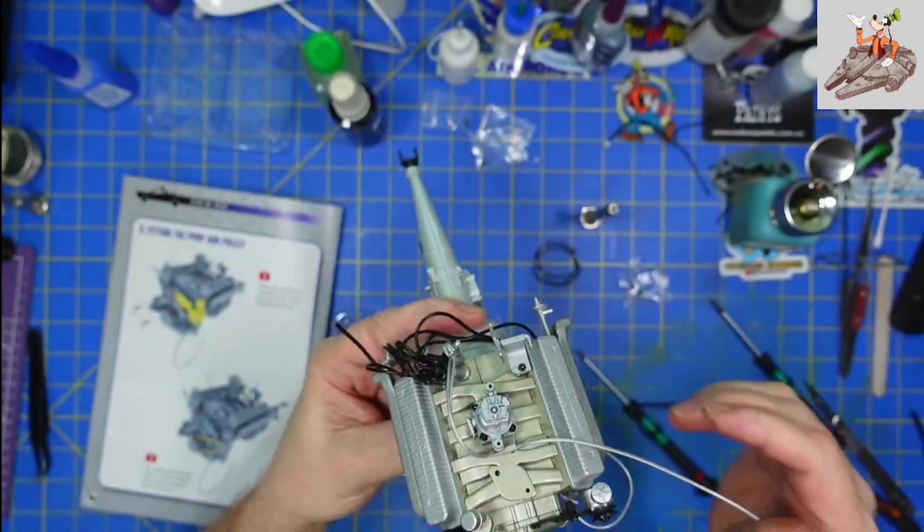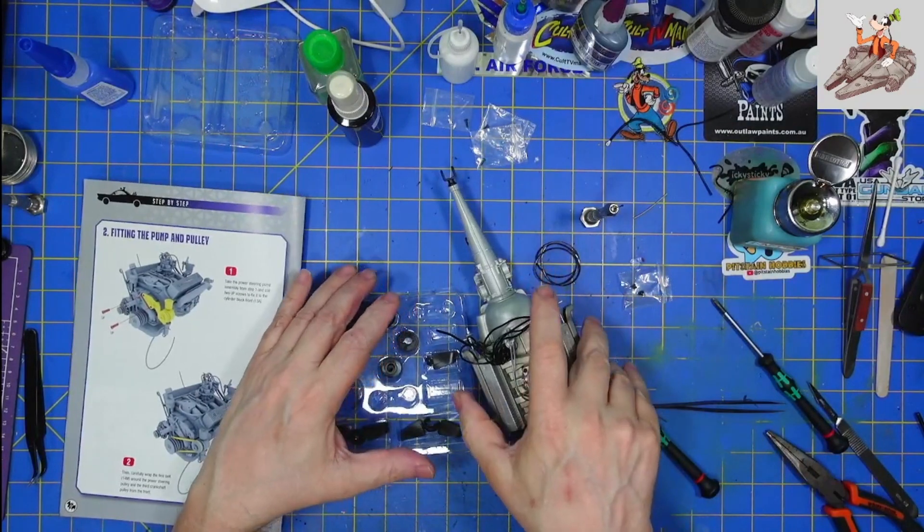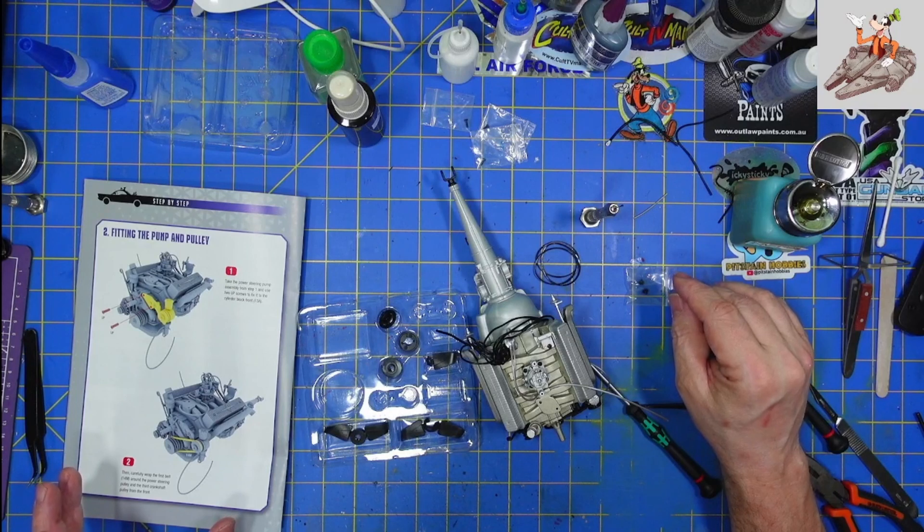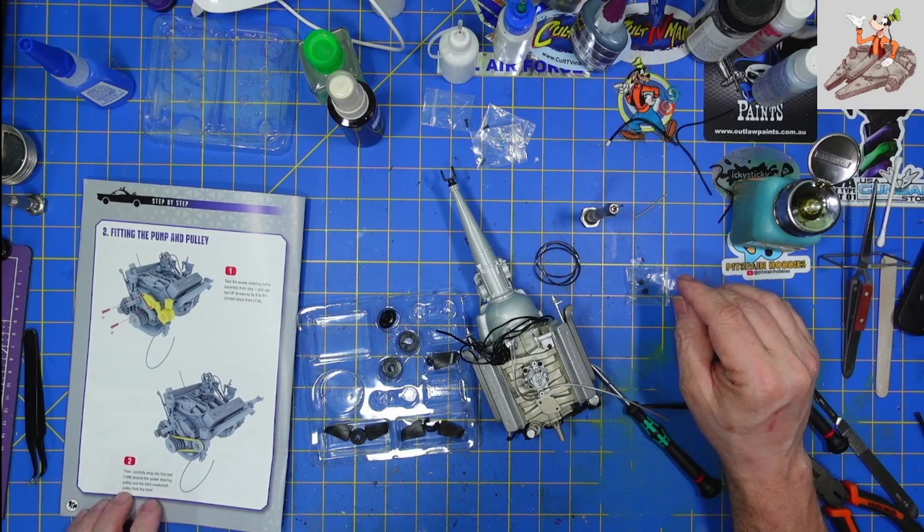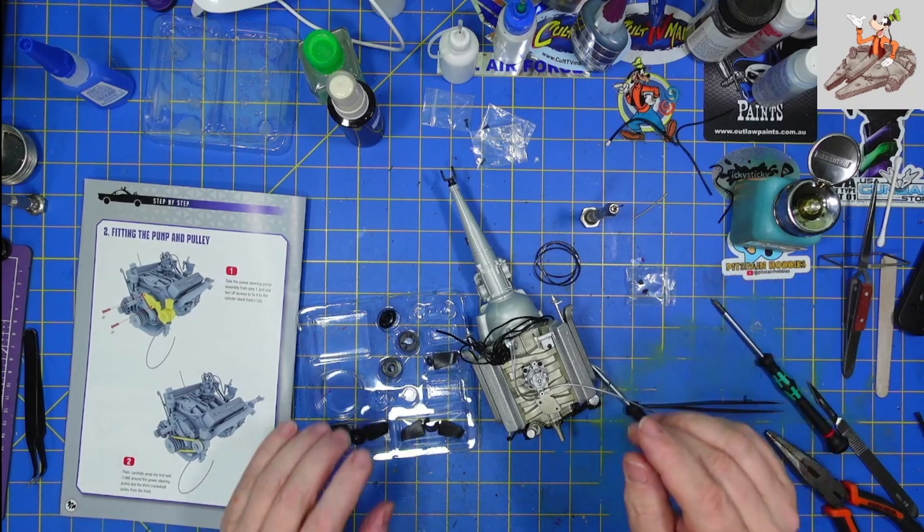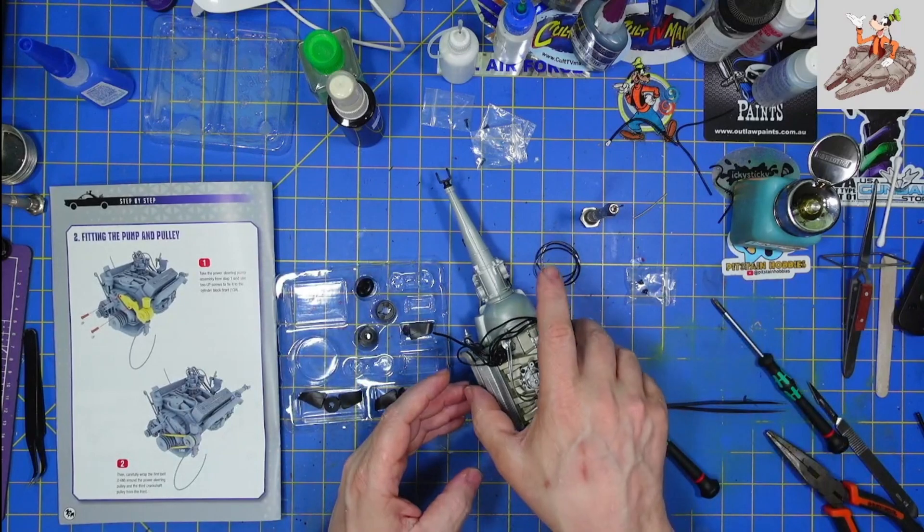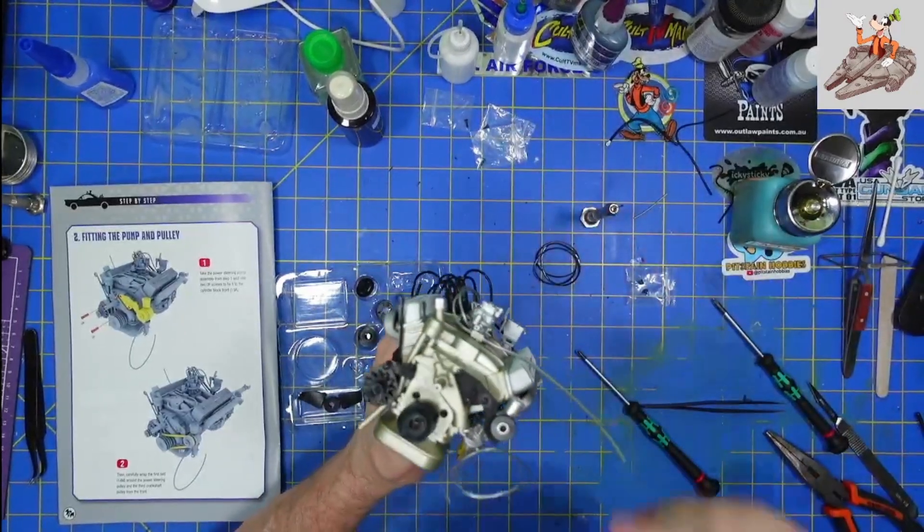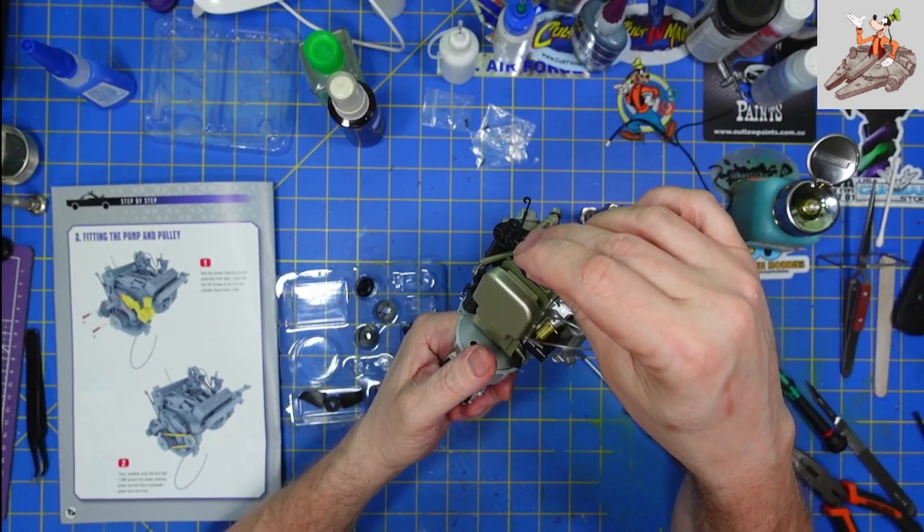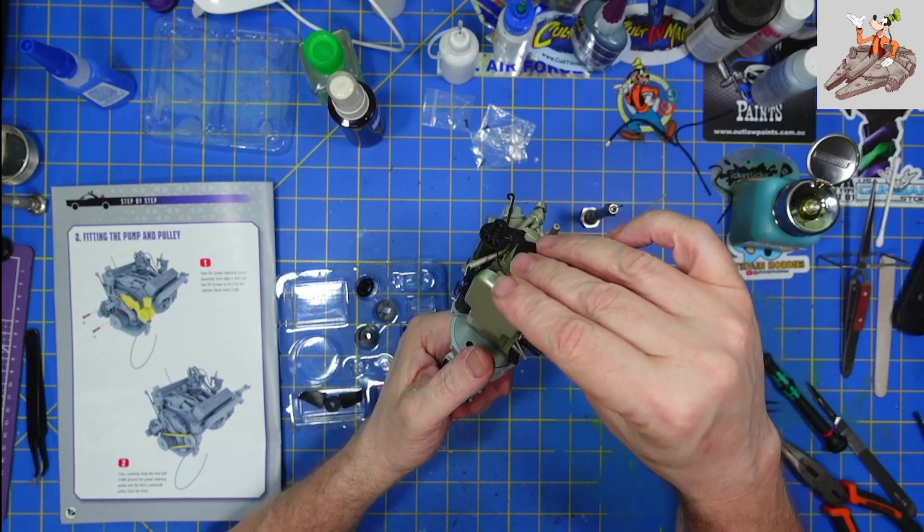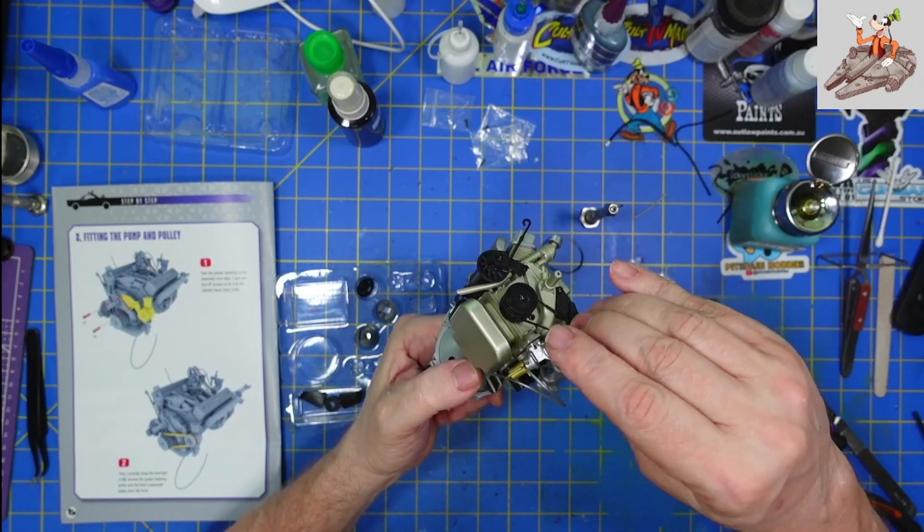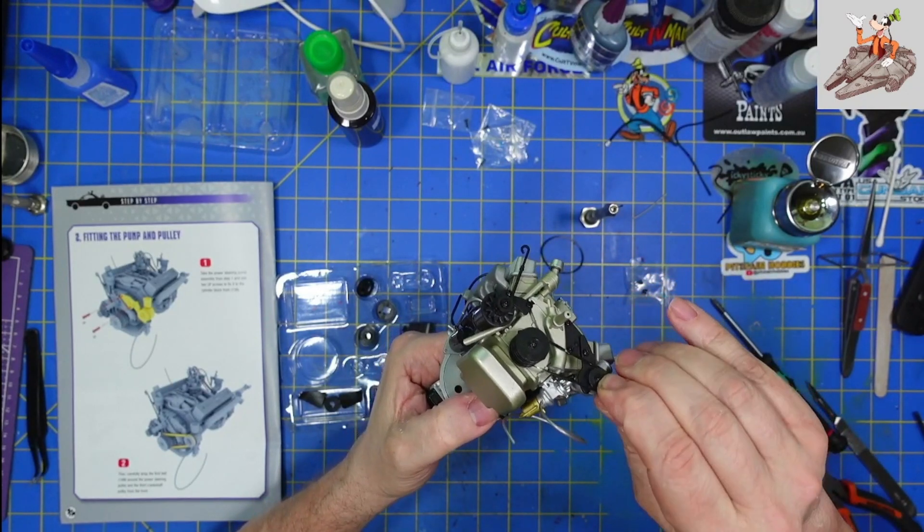But there's the power steering pump. And the pulley there almost moves. It's pretty firm in place. So the next thing we're going to do is carefully wrap the first belt 14M around the power steering pulley and the third crankshaft pulley on the front. So we're going to take this belt. I'm going to actually put it on here first. Put it on the third one. Wrap it around here.